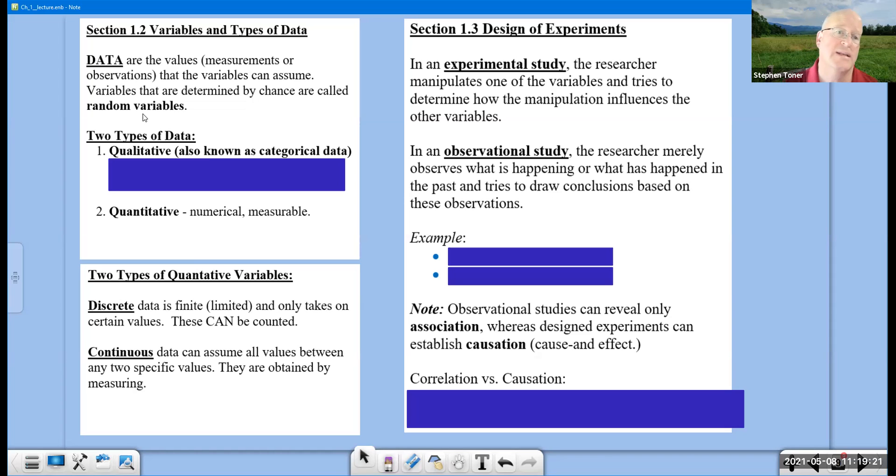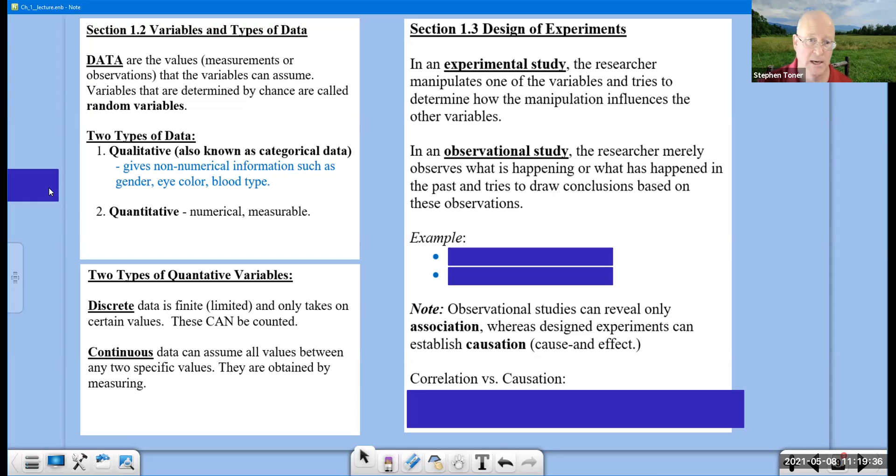We break data into two categories. We have qualitative data, also known as categorical data, which consists of non-numerical information such as gender, eye color, or blood type. In this class, we will emphasize mostly quantitative data, which is numerical and measurable.